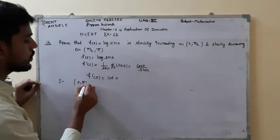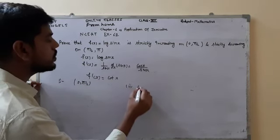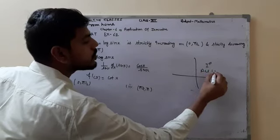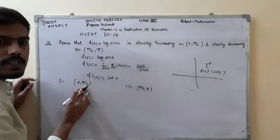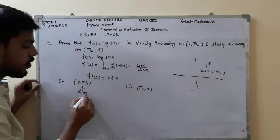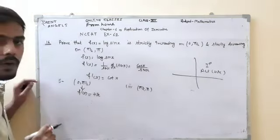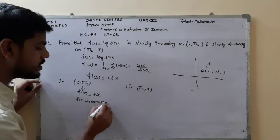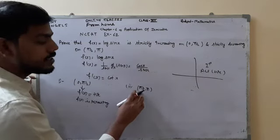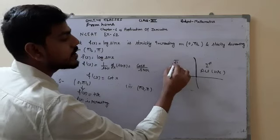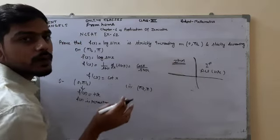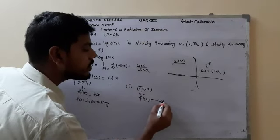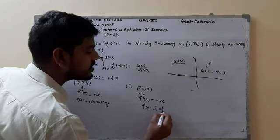For the first interval (0, π/2): in the first quadrant all trigonometric values are positive, so cot x is positive in this interval. Therefore f'(x) > 0, and the function is strictly increasing. For the second interval (π/2, π): in the second quadrant, only sine is positive and cosine is negative, so cot x is negative. Therefore f'(x) < 0, and f(x) is strictly decreasing.